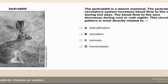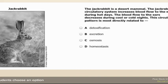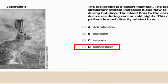When the circulatory system increases blood flow to help stay cool or warm during cold nights, this is a perfect example of homeostasis. Osmosis happens at the cellular molecular level. Homeostasis is the process your body goes through to keep itself in a stable environment so that you survive.